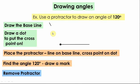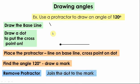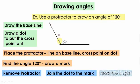After that, remove the protractor then join the dot to the mark we put. Now this angle represents 120 degrees.